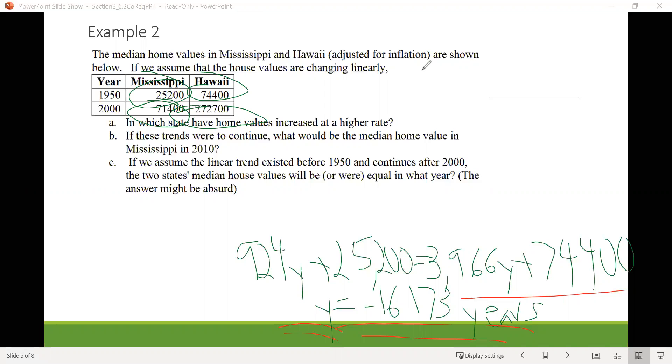So when could the home values in Mississippi have been equal to the home values in Hawaii? Right, it would have to be before 1950, right? Which is why we have this negative here because we're talking about years before 1950. Because remember, Y here means years since 1950. And negative 16.173 means years before 1950.